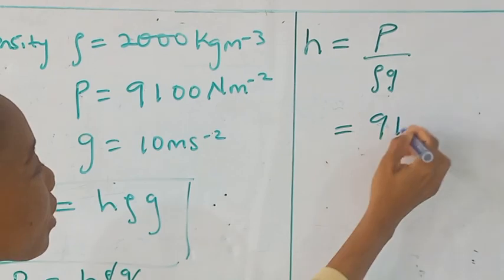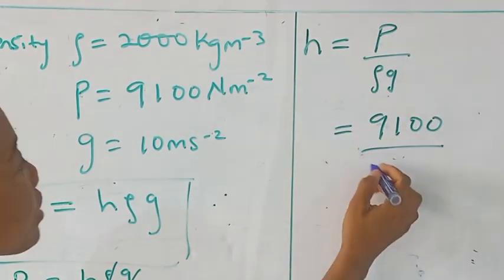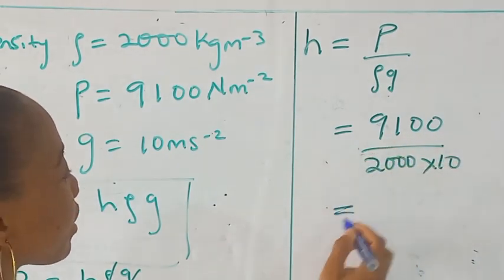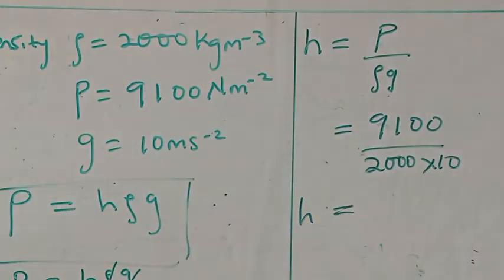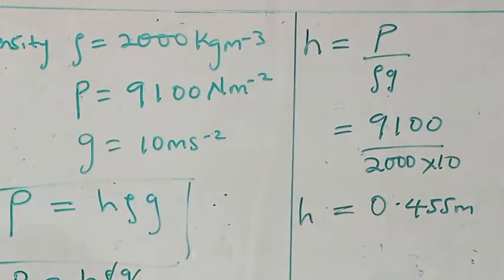Pressure is 9100. Rho is 2000. Times g is 10. So, we have, if we solve it, we are going to have 0.455 meters.